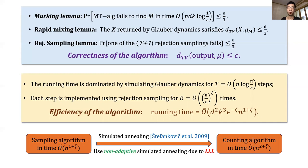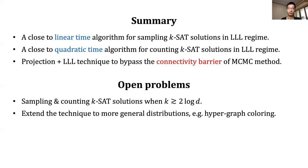In conclusion, in this work we give fast algorithms for sampling and counting CNF solutions. We use projection and Lovász's Local Lemma to bypass the connectivity barrier of the MCMC approach. Interesting open problems remain, such as pushing the threshold down to k greater than 2 log d, which would give the optimal regime for sampling and counting CNF solutions, and extending our techniques to more general distributions such as hypergraph coloring. Thank you for listening.